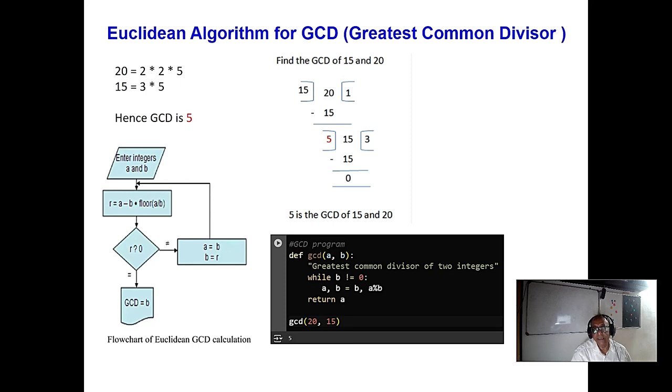Today we are discussing GCD, greatest common divisor by Euclidean algorithm. What is Euclidean algorithm? The most brute force technique is whenever two numbers are there, you factorize all the numbers and you take the common factor. Here, 5 is the common factor. That is the brute force technique.